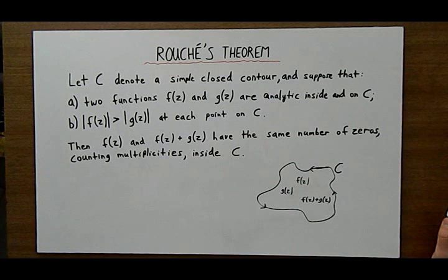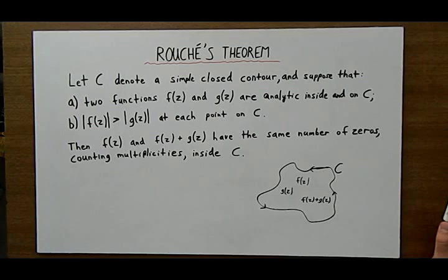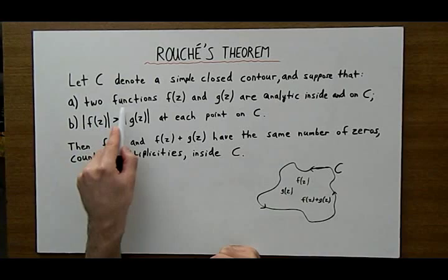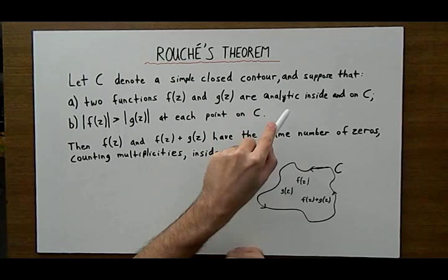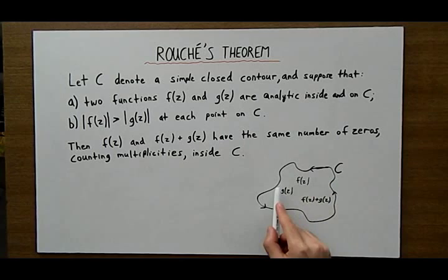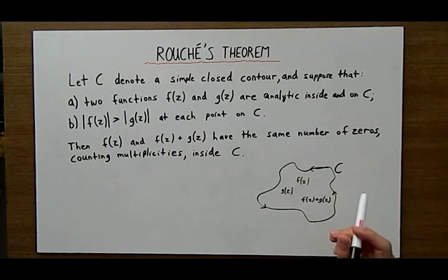Basically what the theorem says is that you have a contour C, which is a simple closed contour, and you suppose that you have two functions f and g which are analytic inside and on the contour C. So here's the contour that we have here, it's some contour that I've drawn, it can be any.